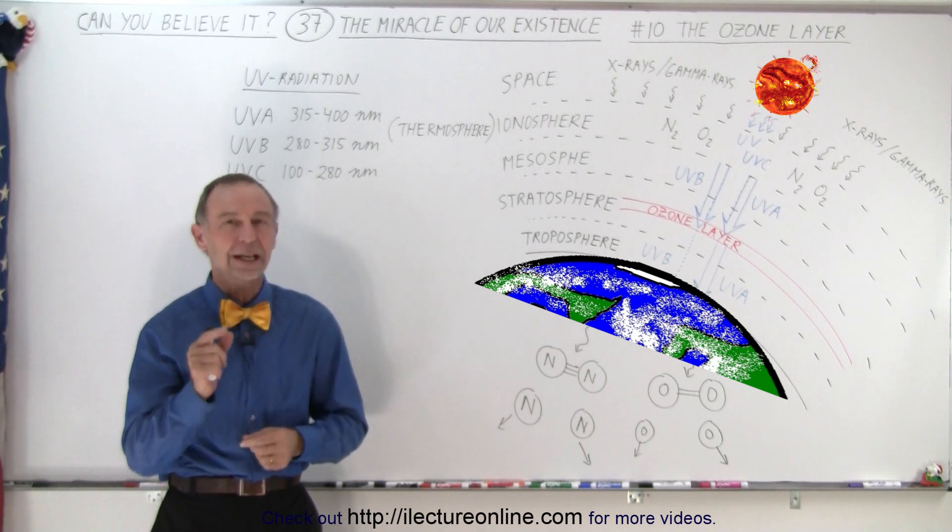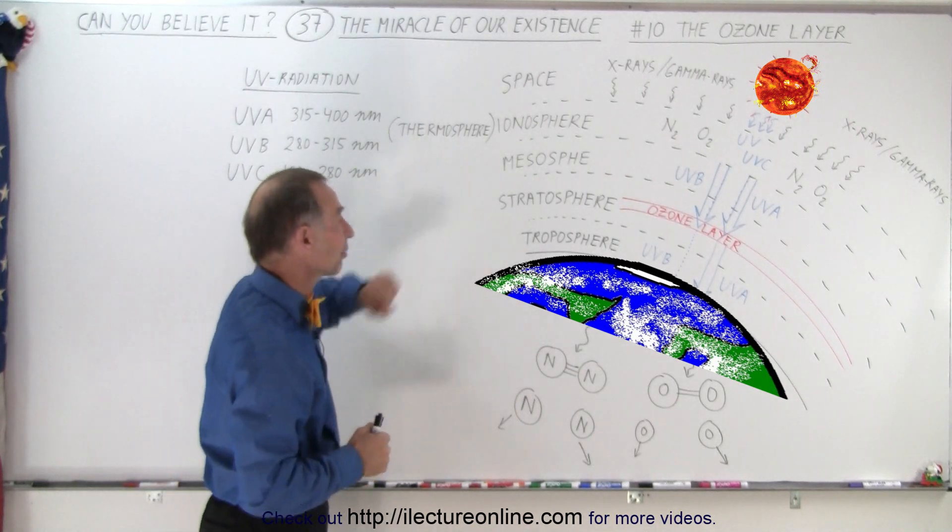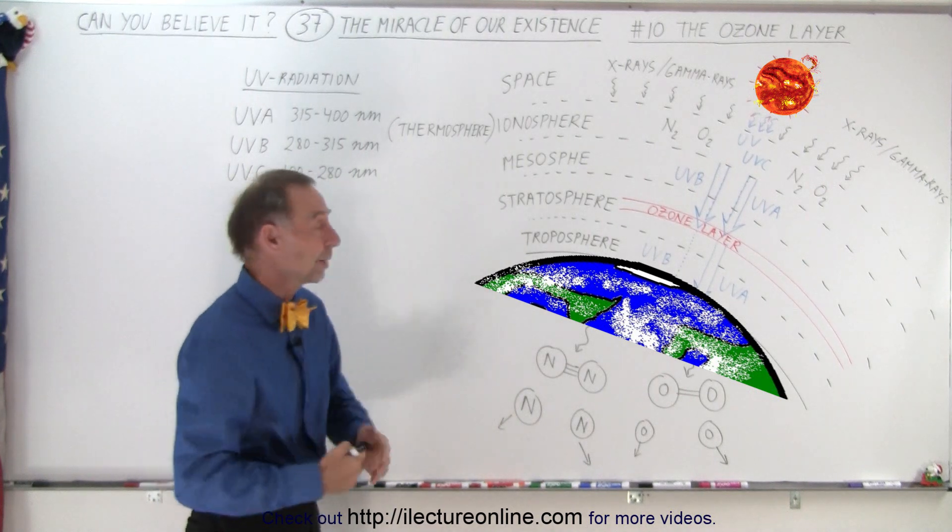What is that essential layer? It's called the ozone layer and exists in the stratosphere. Now there's four layers to our atmosphere.